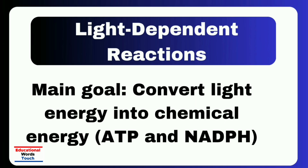The electrons then travel through an electron transport chain, and their movement helps form ATP, the cell's main energy molecule. At the same time, another molecule, NADP, picks up electrons and hydrogen to become NADPH. Both ATP and NADPH store the energy captured from sunlight and carry it to the next stage, the Calvin cycle. In simple terms, the light dependent reaction converts light energy into chemical energy — ATP and NADPH — that the plant will use to make glucose.